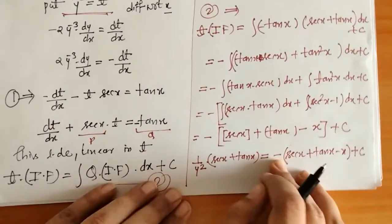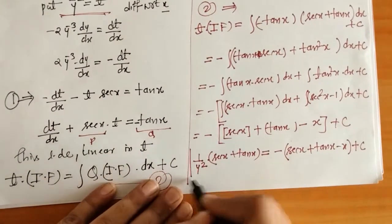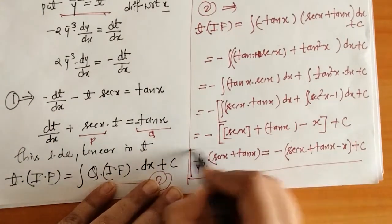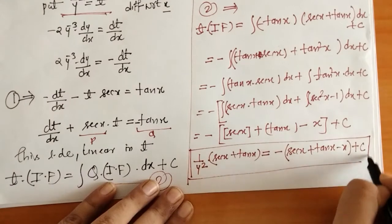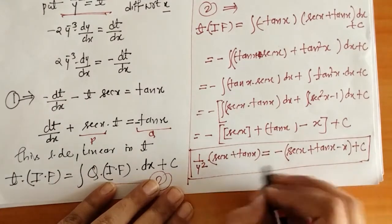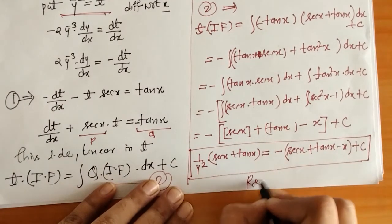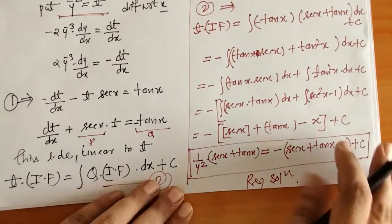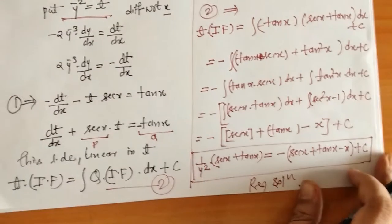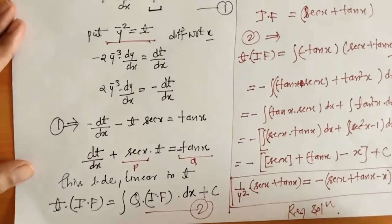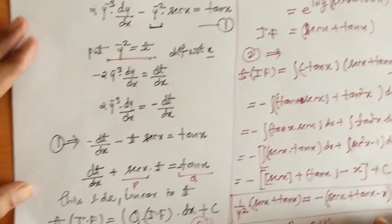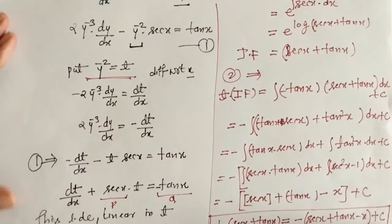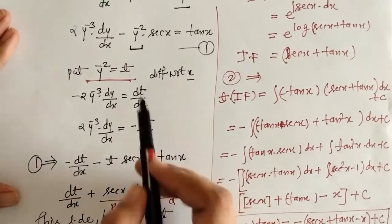Now we substitute back the value of t. Since t equals 1/y², and the integrating factor is sec x plus tan x, we have (1/y²)·(sec x + tan x) equals minus of (sec x + tan x − x) plus c. Simplifying, we get the required solution of the given differential equation.